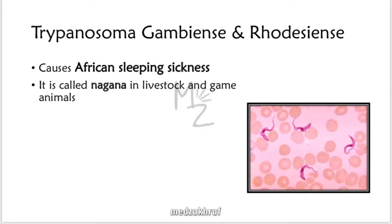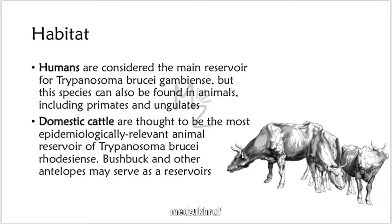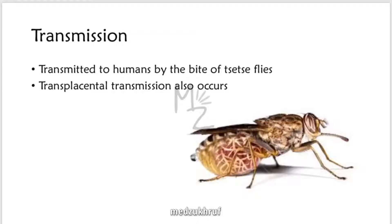Trypanosoma brucei gambiense and rhodesiense cause African sleeping sickness, called Nagana in livestock and game animals. Humans are considered the main reservoir for Trypanosoma brucei gambiense, but this species can also be found in animals including primates and ungulates. Domestic cattle are the most epidemiologically relevant animal reservoir of Trypanosoma brucei rhodesiense. Bushbuck and other antelopes may also serve as reservoirs. Transmission occurs via the bite of tsetse flies. Transplacental transmission also occurs, responsible for causing congenital infection.